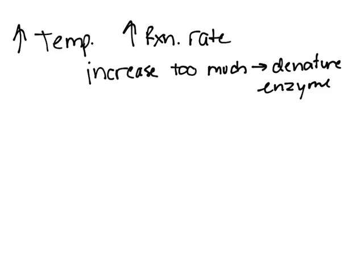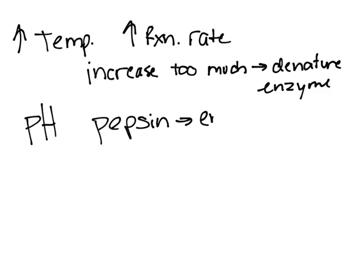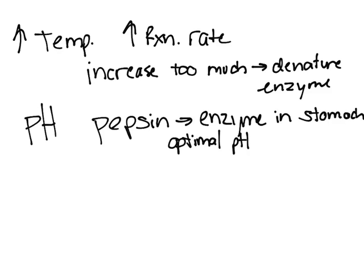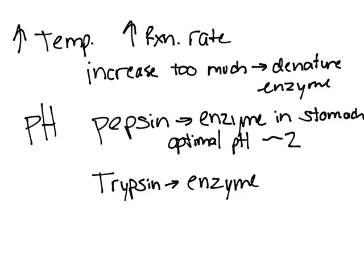Another factor is pH, which measures the acidity of the solution. Different enzymes have different optimal pH. For example, pepsin is an enzyme in the stomach that has an optimal pH of around 2, which is very acidic. While trypsin has an optimal pH of around 8.